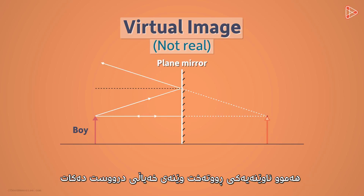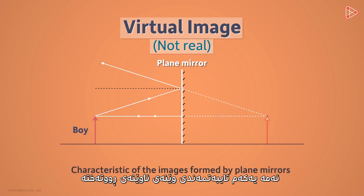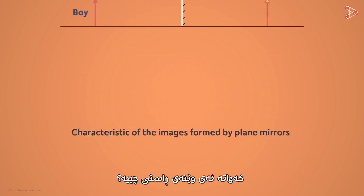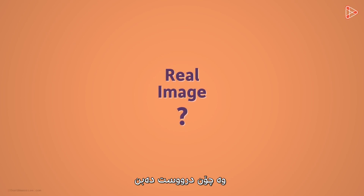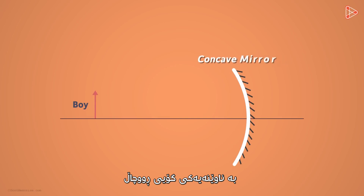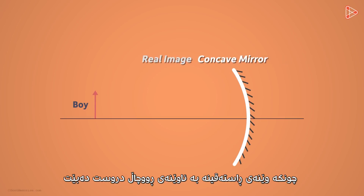Every plane mirror forms a virtual image. This is the first characteristic of the images formed by plane mirrors — images formed by plane mirrors are virtual and not real. So what is a real image, and how are they formed? Let's replace this plane mirror with a spherical concave mirror. Real images can be formed by concave mirrors.